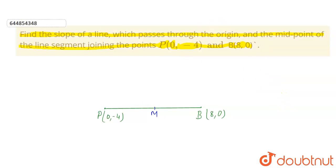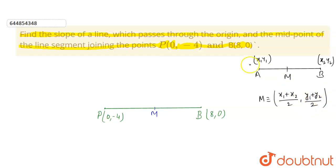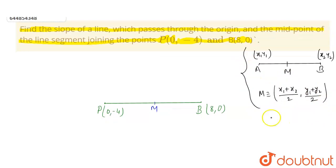Now the midpoint of PB — there is a concept. If you have a line with endpoints A which is (x1, y1) and B which is (x2, y2), then the midpoint of AB will be ((x1 + x2)/2, (y1 + y2)/2). This is the concept for finding the midpoint.